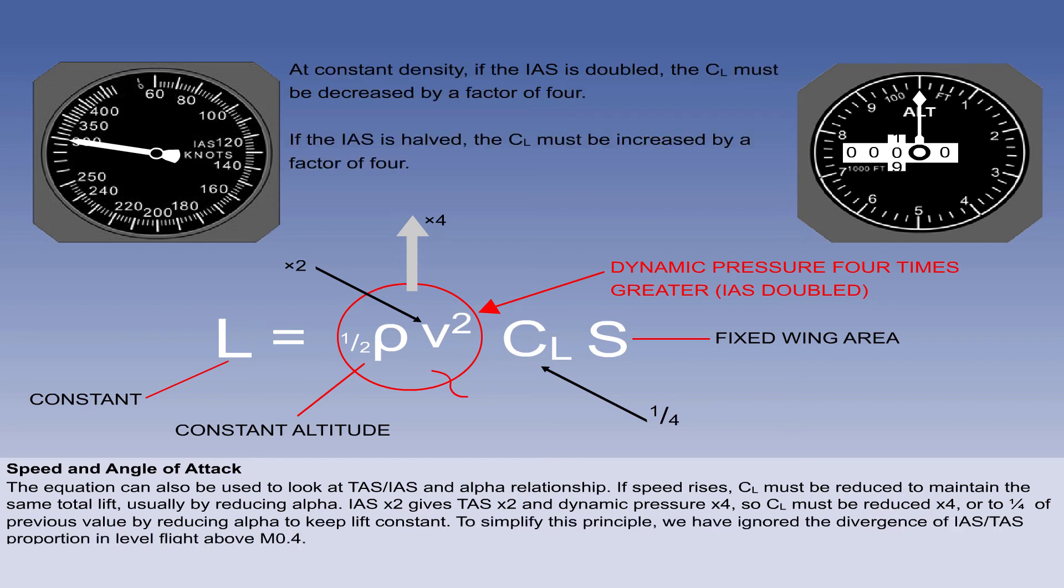To make this principle easy to understand, we can say that TAS will change in proportion to IAS at a constant altitude. This is, however, not true of speeds above Mach 0.4.